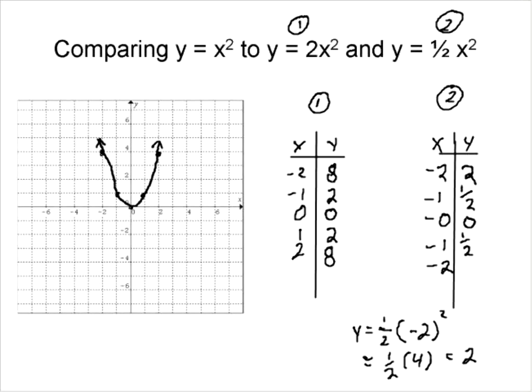Negative 1 is going to be, oh, let's just make these positive because we want to make sure we use the right values here. Positive 1 is going to be 1 half and positive 2 is going to be 2. Let's plot these graphs together on the same graph.